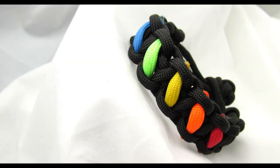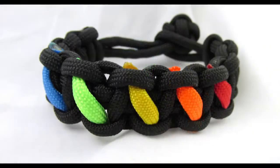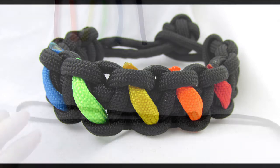Hey guys, in this video I'm gonna show you how to tie the rainbow paracord bracelet. It is basically a cobra knot with a couple of scraps of paracord inserted between the knots.